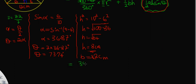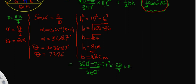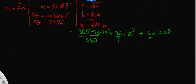What we are about to calculate is the area of the major segment. The formula gives: (360° − 73.74°) / 360° × (22/7) × 10² + ½ × 12 × 8. So that is (286.26/360) × (22/7) × 100 + 48.